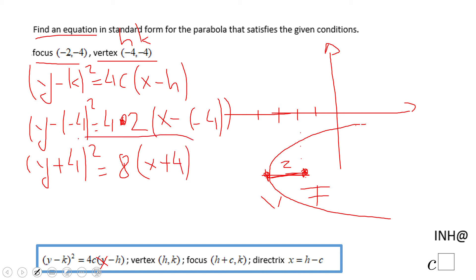This is the equation of a parabola that has the focus at negative 2, negative 4, and the vertex at negative 4, negative 4. You can see the real picture right here.